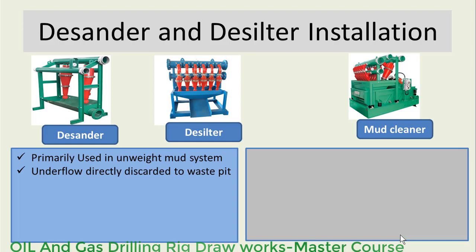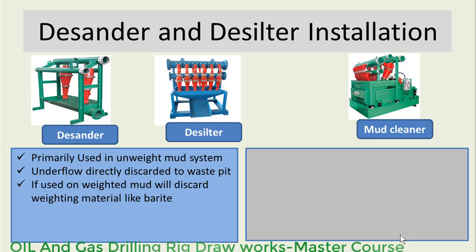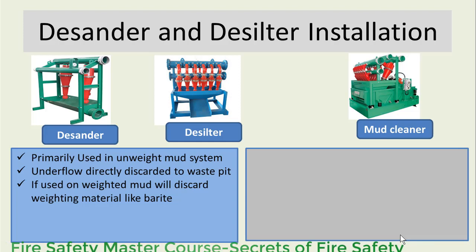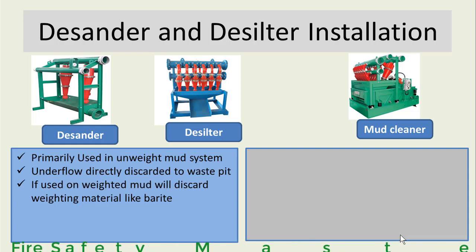If used on weighted mud, these units will discard weighting material like barite, because barite particle size falls within the particle size range that will be removed by desander and desilter. So it is not recommended to run desander and desilter when they are installed separately without a shale shaker underneath.